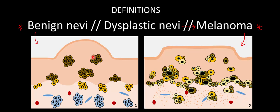Notice these brownish cells — these represent the melanocytes, the pigment-producing cells in the skin. What I want to call your attention to is that these melanocytes are no longer confined to the dermal-epidermal junction where they're usually located. Instead, these melanocytes are forming clusters found in the epidermis, at the dermal-epidermal junction, as well as down in the dermis.